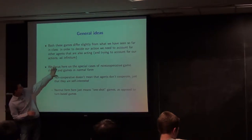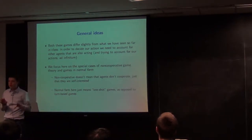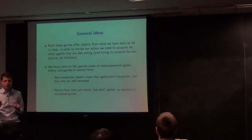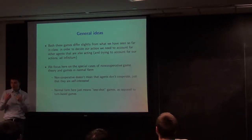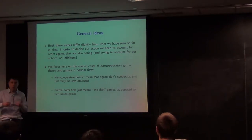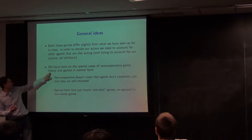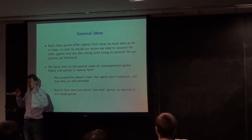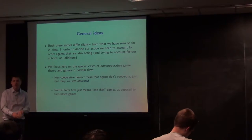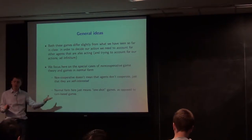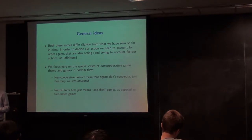Game theory provides a framework for dealing with these kinds of issues. We're going to focus on a few special cases. First, we'll focus on what's called non-cooperative game theory, which does not mean you can't cooperate — it just means that you are a self-interested agent. So in the Prisoner's Dilemma, the solution is actually both of you defecting, because as a self-interested agent, you always pick the action that is better for you, which is always to implicate the other person. We're also going to talk about games in normal form — essentially the one-shot form you saw before, where you each have one action, see the outcome, and can't see anyone else's move before you take yours.